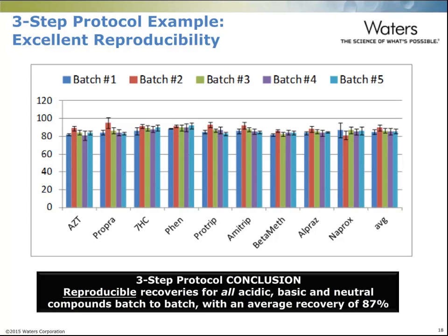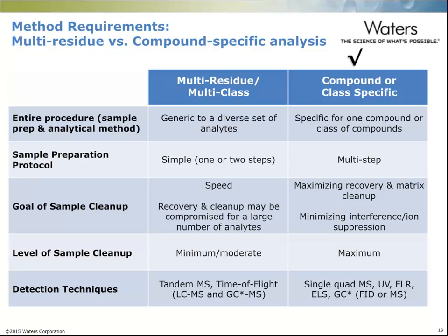Oasis Prime also showed excellent reproducibility. Using five different batches of Oasis Prime cartridge with nine different compounds repeated five times, the recovery numbers were very tight, demonstrating very good batch-to-batch reproducibility. This type of catch-and-release three-step protocol is most suitable for compound or class-specific methods.